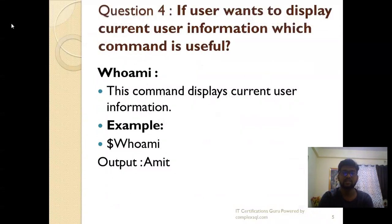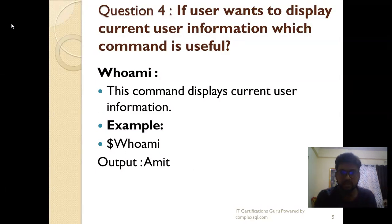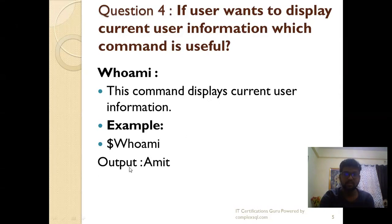If a user wants to display the current user information, which command is useful in Unix? The command is 'who am i' — that is the command in Unix used to display the current user information. For example, typing 'who am i' will display the current user output.